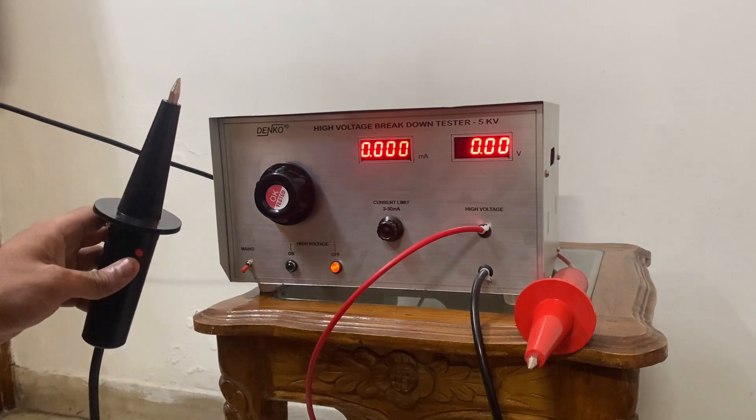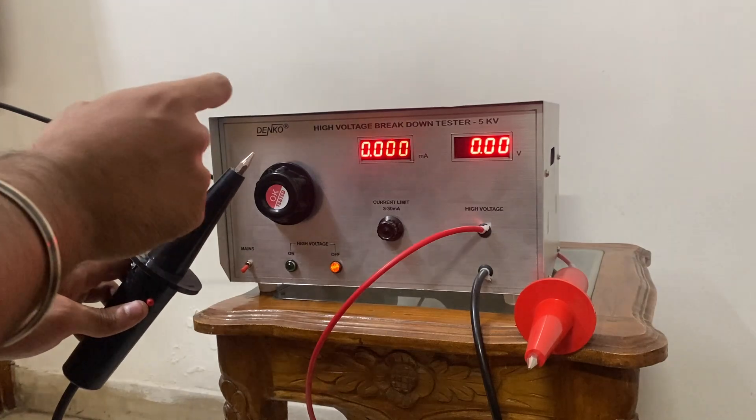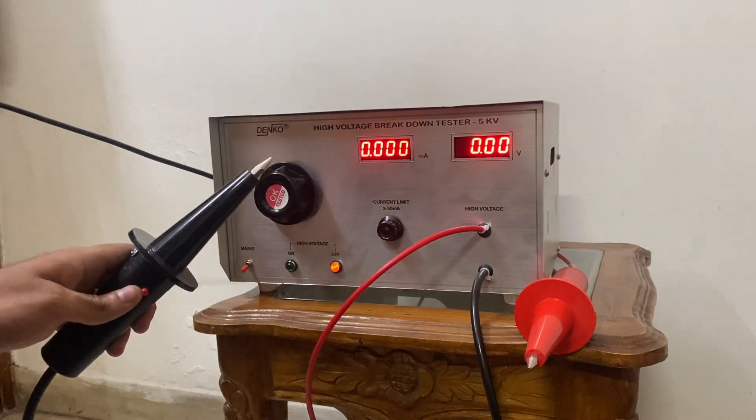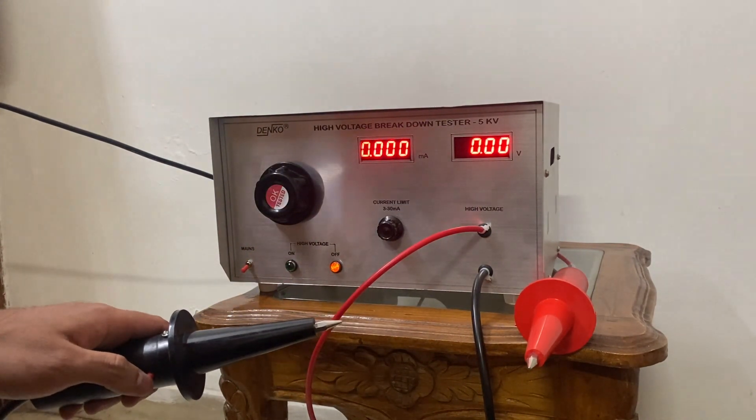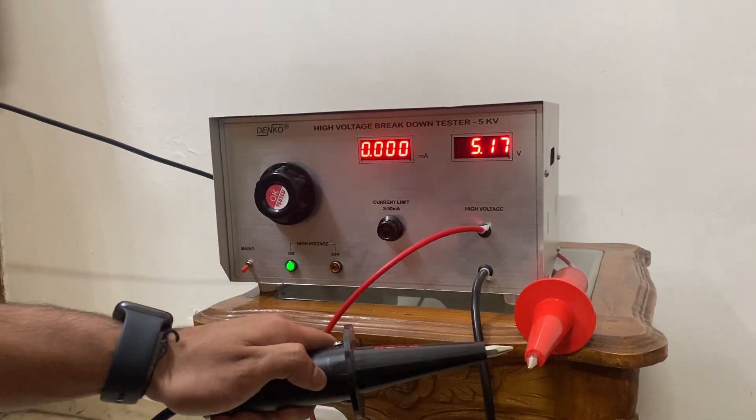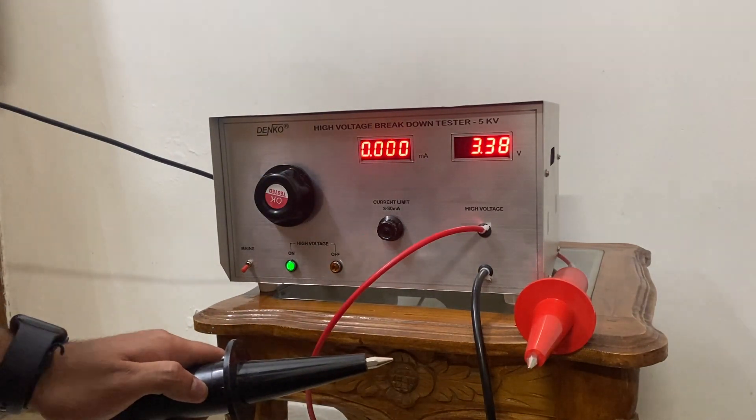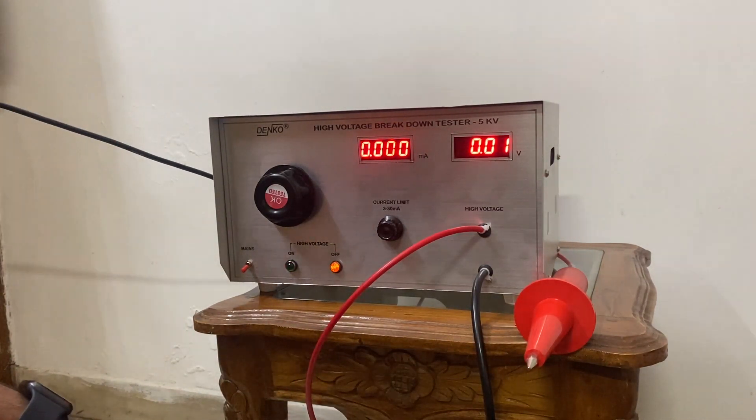The test subject is connected to each end of these probes, and at whatever voltage it breaks down, it's going to show on this meter and trip instantaneously so you can note down the voltage at which it trips. For example, if your product is tripping at 3.38 kV, it's going to show over there.